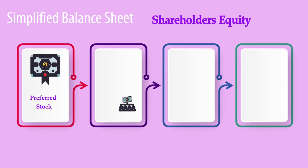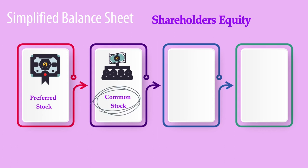Common stock represents capital received by a company when it issues shares. This allows for participation in the profits of the company in the form of a dividend. It also represents ownership and voting rights — one vote for every share held. If the company is dissolved, any residual amounts left over after everyone else is paid would go to the common shareholders.